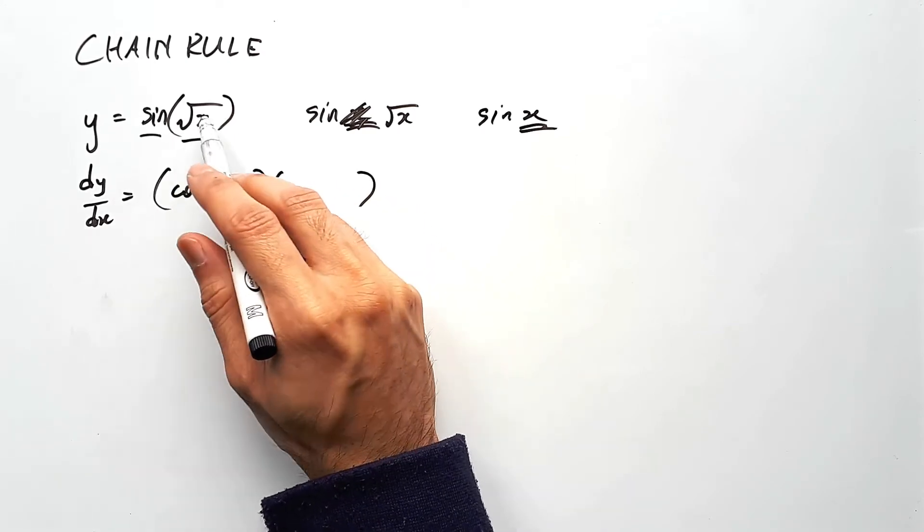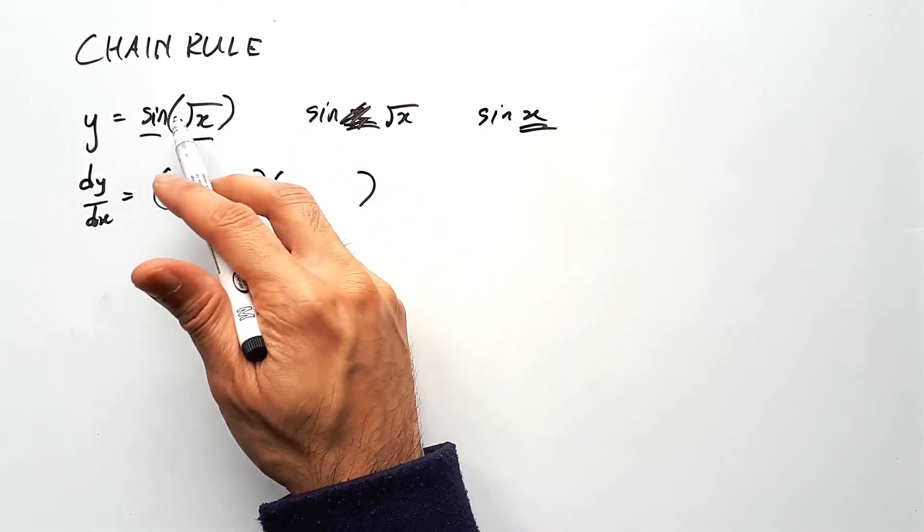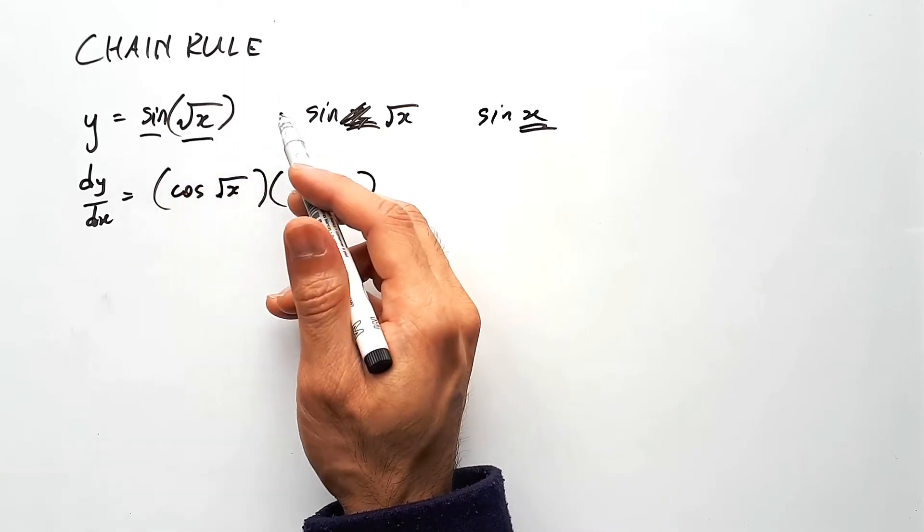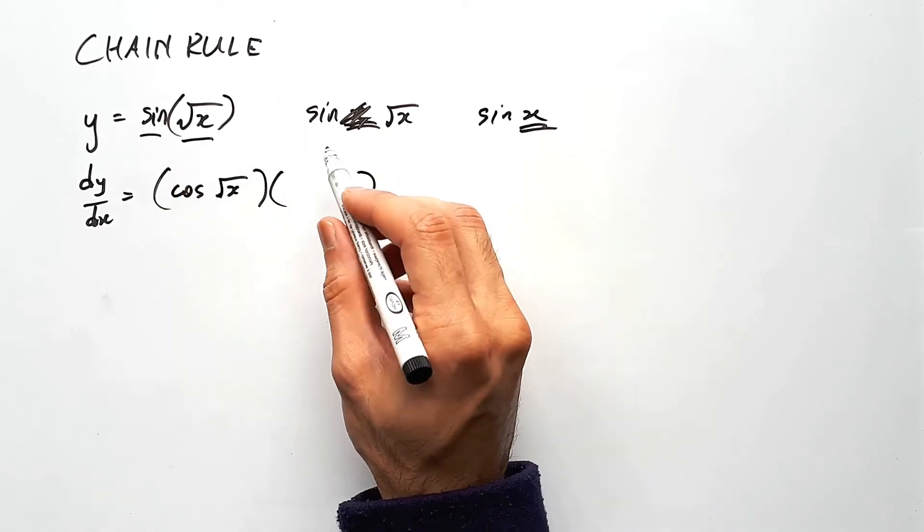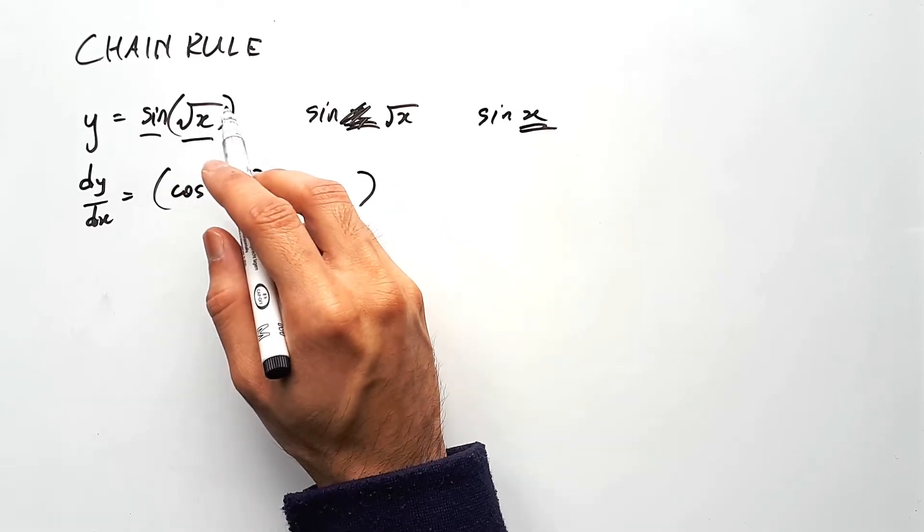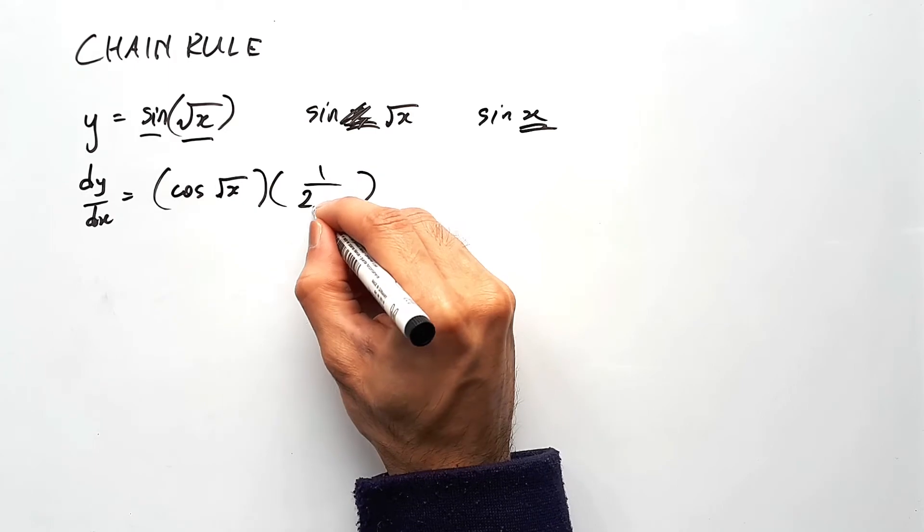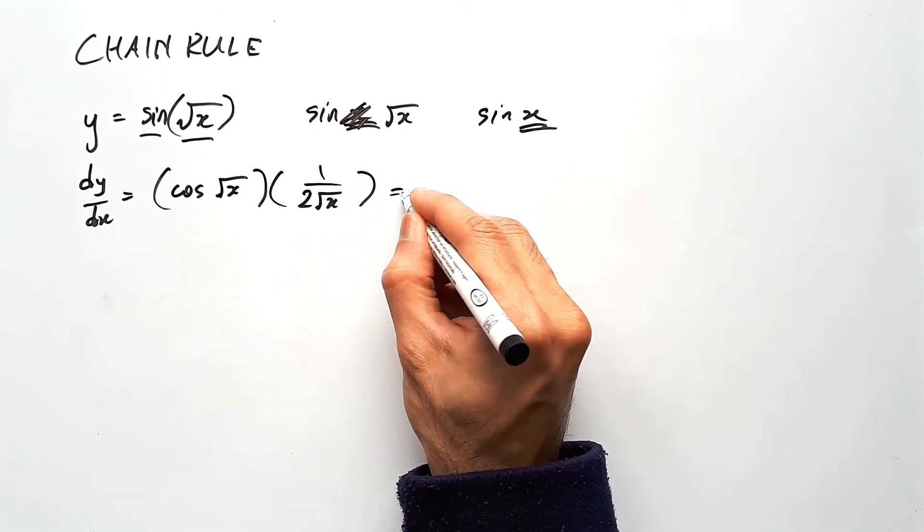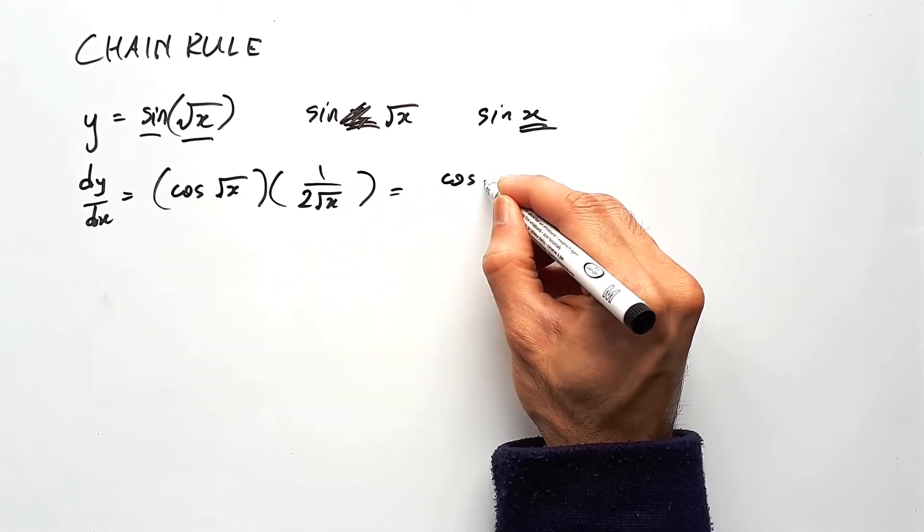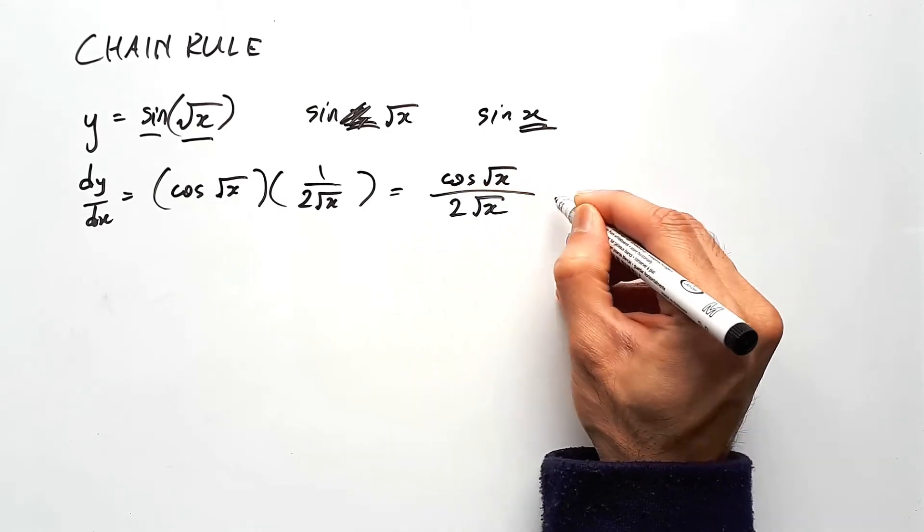But because the something is not just x, but it's a function all on its own, a square root function, you have to differentiate that in the second bracket. So as we've seen from the previous section, we know that the square root of x will differentiate to 1 over 2 root x. And then you can simplify that as cos root x over 2 root x.